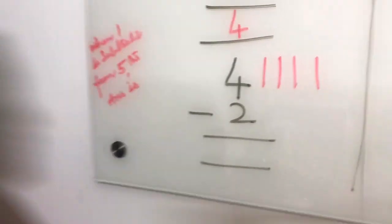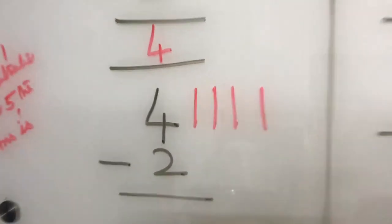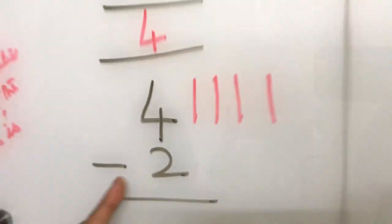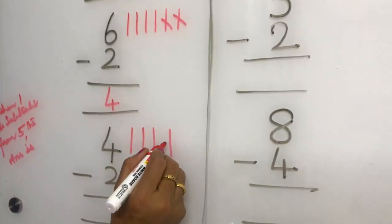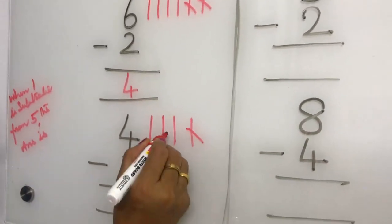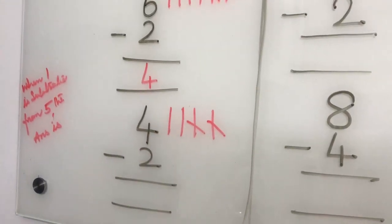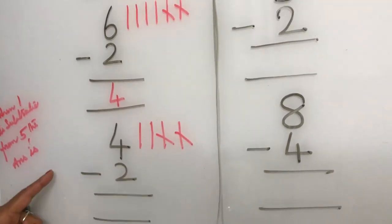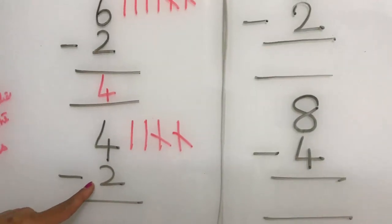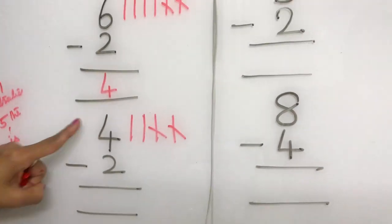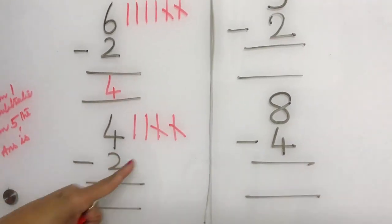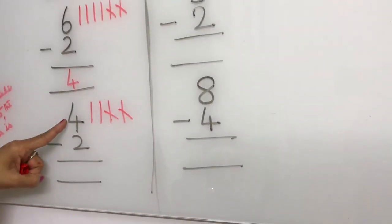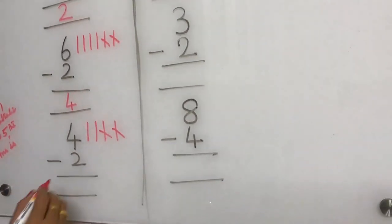How many lines do we take away from four? Two. We take away two lines — one, two. How many remaining lines are there? Two. One, two. When two is subtracted from four, the answer is two. This two is subtracted from four, so the answer is two.